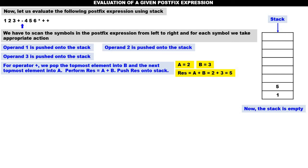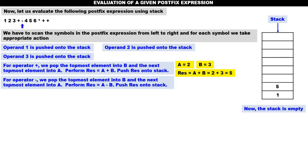Next symbol is minus — that is also an operator. For operator minus, we pop the topmost element into B, and the next topmost element into A. Perform RES = A minus B. The topmost element is five — five is taken into B. The next topmost element one is taken into A. Perform RES: one minus five equals minus four. Minus four is pushed onto the stack.